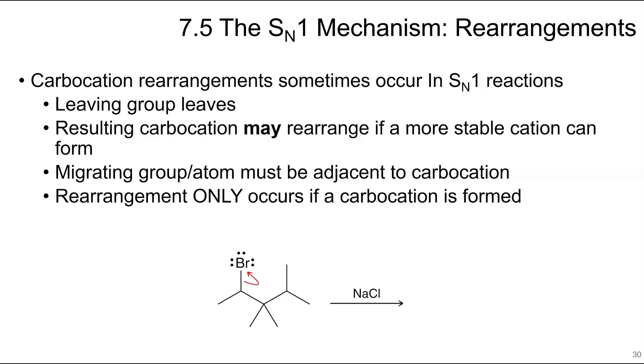Sometimes in SN1 reactions, a carbocation rearrangement will occur. First, the leaving group leaves, which results in a carbocation, and this may rearrange if a more stable carbocation can form. The migrating group or atom has to be next to the carbocation, so it won't rearrange from two carbons away. And the rearrangement occurs only if a carbocation is formed. So this does not happen in SN2.